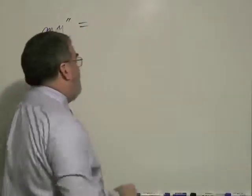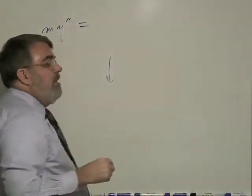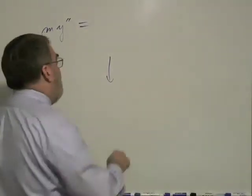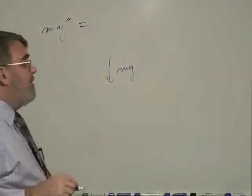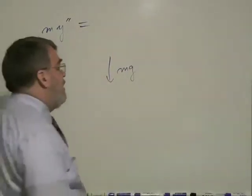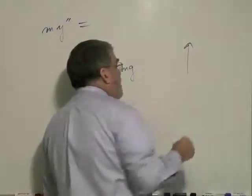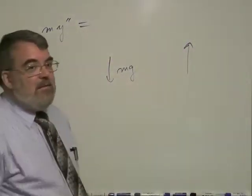The total force will be the force coming down, this would be mass times the gravitational acceleration, and the air resistance is pushing back the other way.